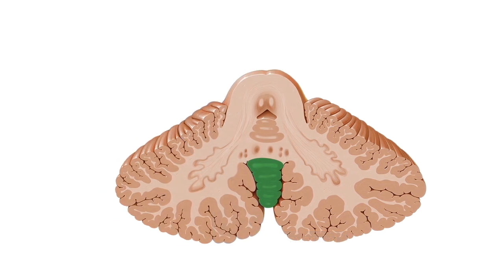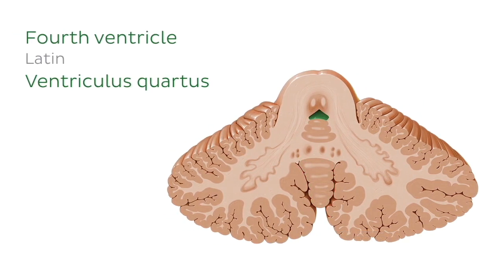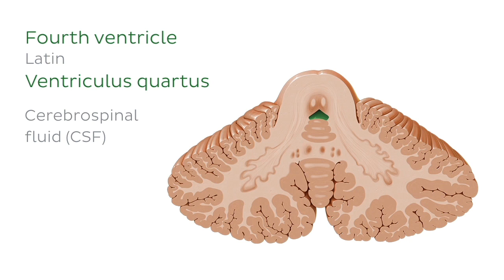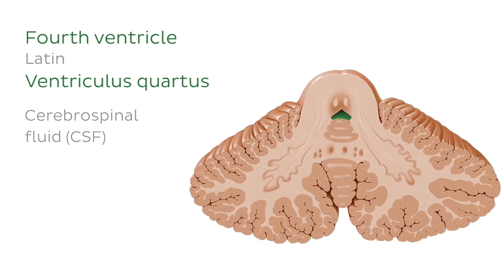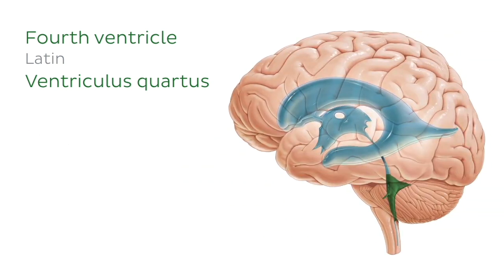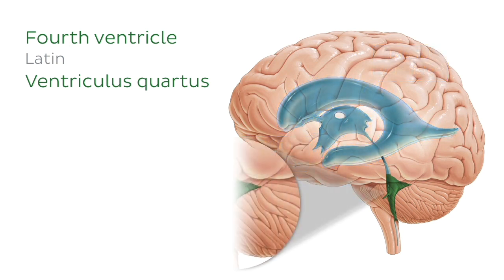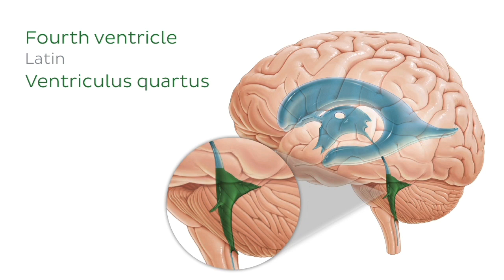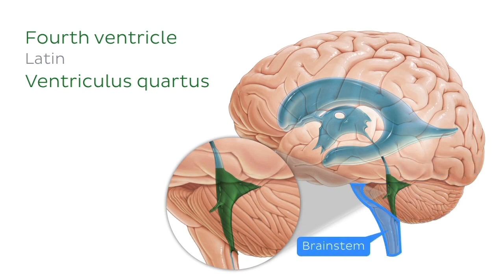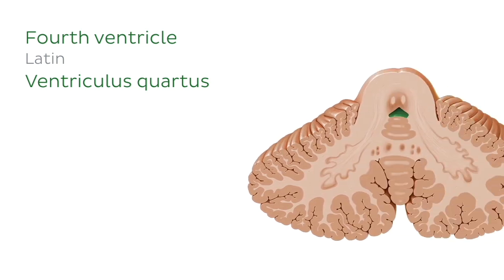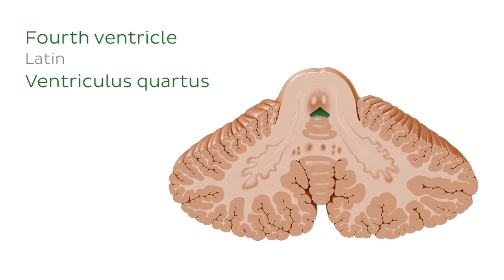A very important cavity associated with the cerebellum is the fourth ventricle. It's important to note that our brain has four ventricles in communication with one another, filled with cerebrospinal fluid — a clear fluid with several important functions in our central nervous system. The four ventricles include the two lateral ventricles as well as the third and the fourth ventricle. The fourth ventricle is closely associated anatomically with the cerebellum, and in this image we can see the entirety of the ventricular system traveling from the cerebrum down to the spinal cord. The fourth ventricle, highlighted here in green, is sandwiched between the cerebellum and the brainstem, as we can see in this cross-section.